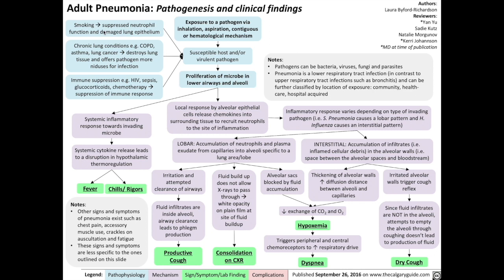Three factors tend to make patients more susceptible to pneumonia. First is smoking, which suppresses neutrophil function and damages the lung epithelium. Second, chronic lung conditions such as COPD, asthma, and lung cancer destroy lung tissue and offer pathogens more niduses for infection. Third, immune suppression — if the patient has HIV, is septic, on glucocorticoids, or on chemotherapy — suppresses the immune response and makes the patient more susceptible to infection.